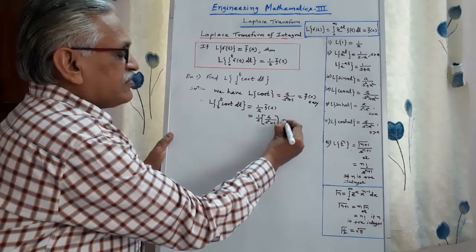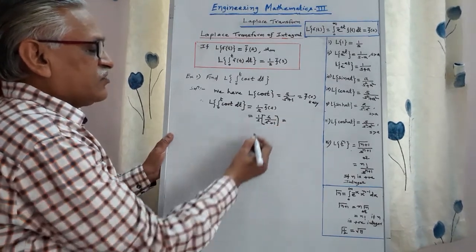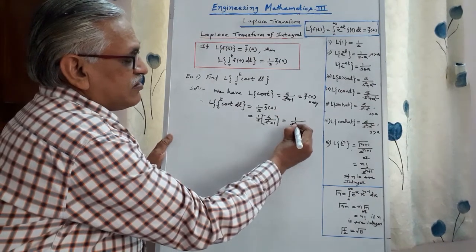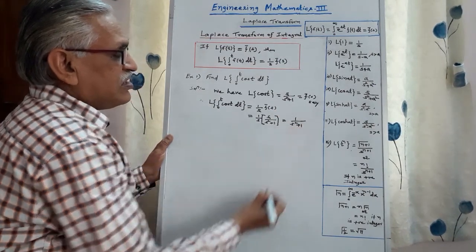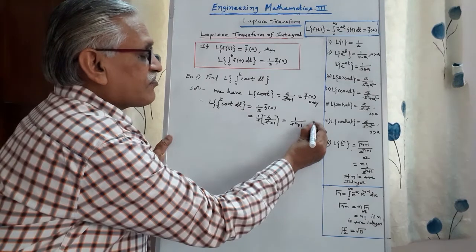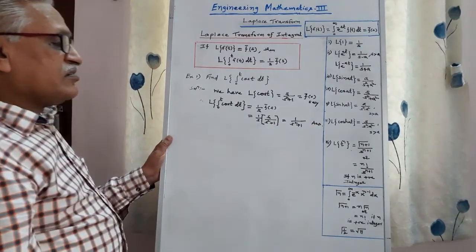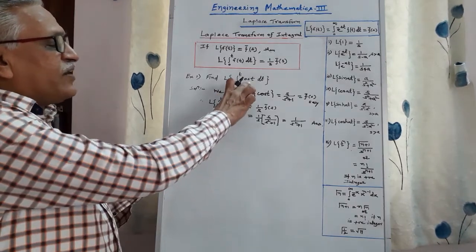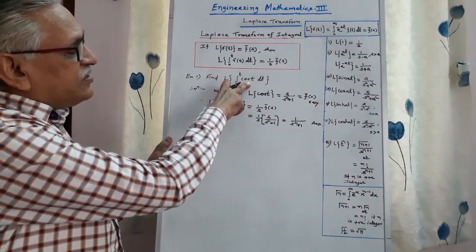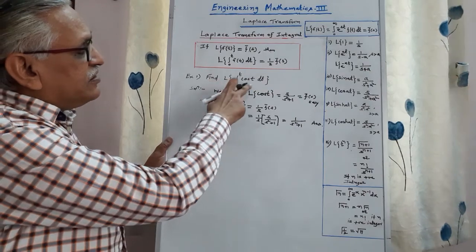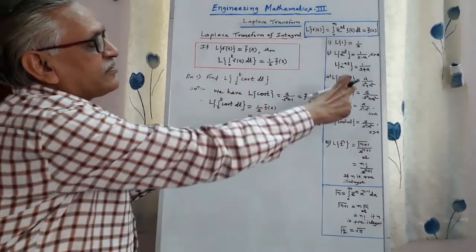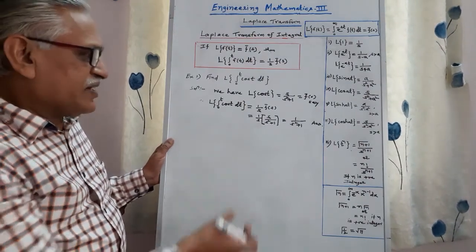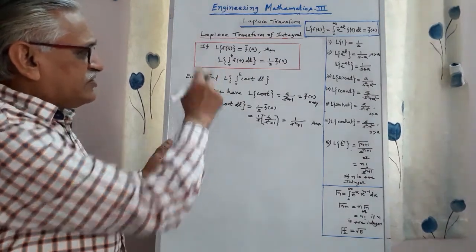And therefore, we get it is equals to s/(s² + 1), with s getting cancelled, giving 1/(s² + 1) as the required answer. Note: don't perform this by finding the integration of cos(t) as sin(t) and then Laplace of sin(t) — that can be used as a verification. But here, we are supposed to apply this theorem only.